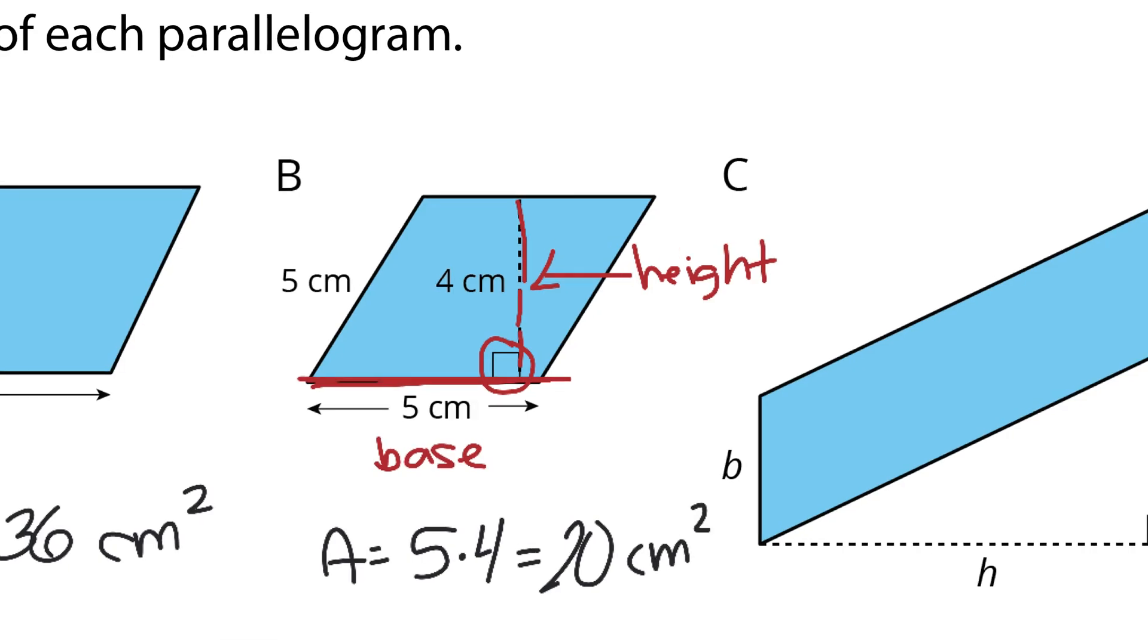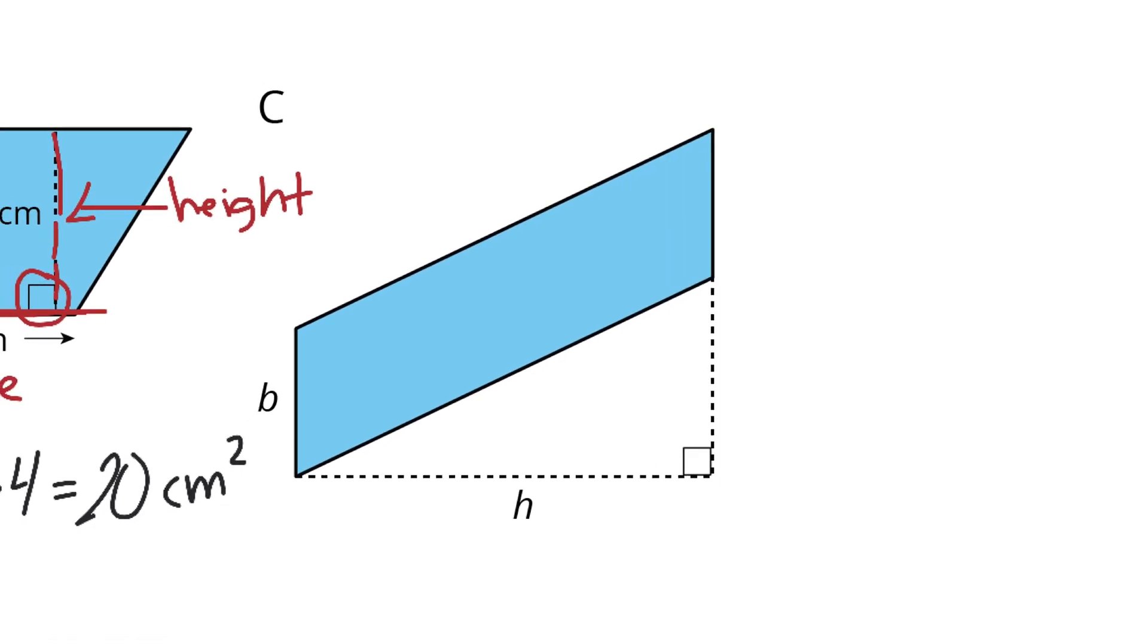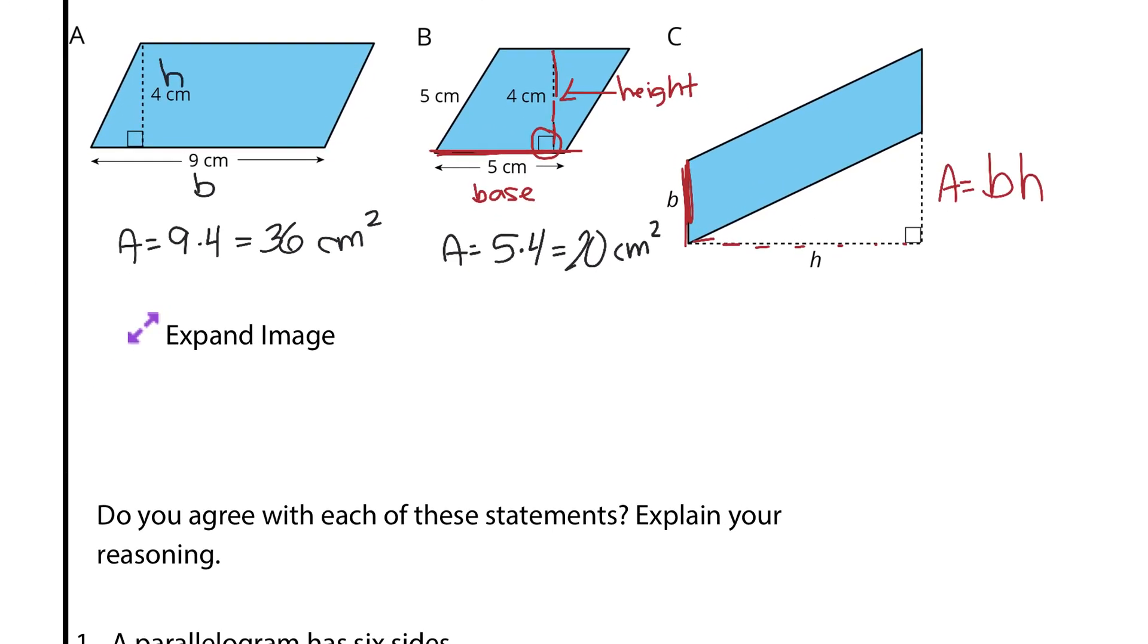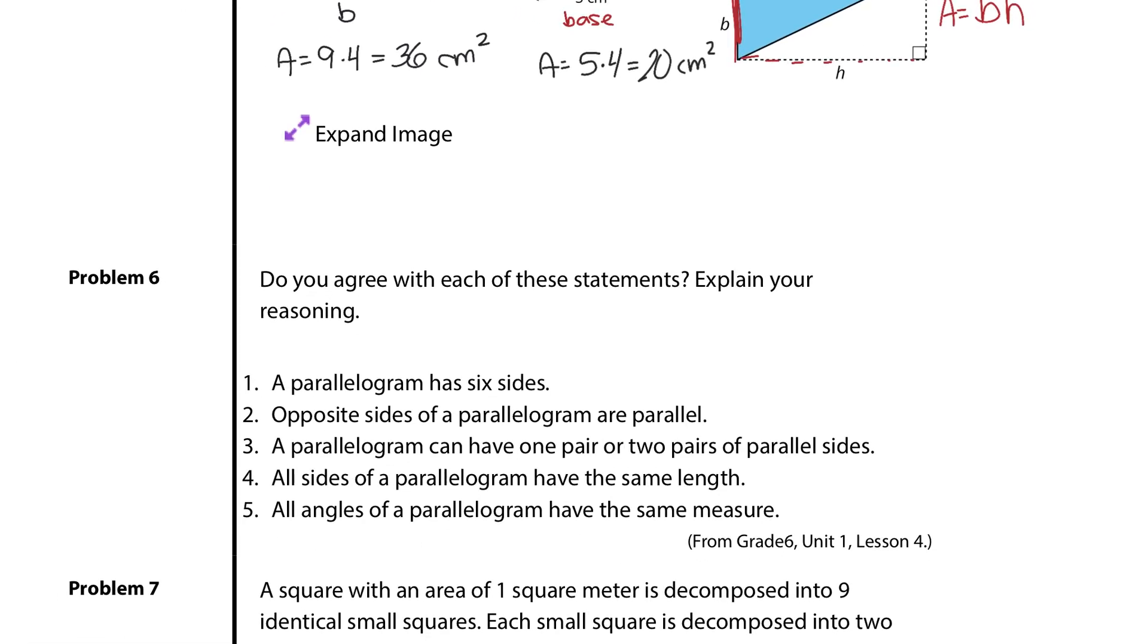And in C, as you can see, here's the base. Then here is our height. And if area is equal to that base, which is B, times the height, which is H, so area equals BH, or just base times height. Hmm. Almost looks like that could be a formula or something there. Hmm. Now, question 6.